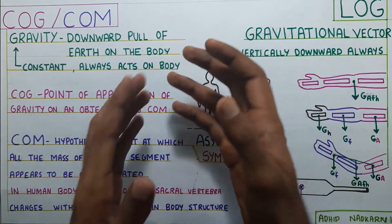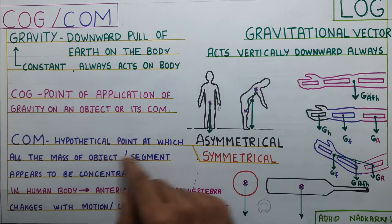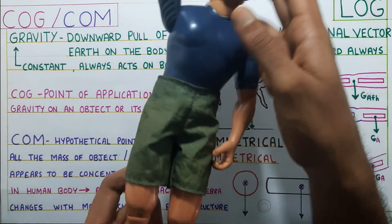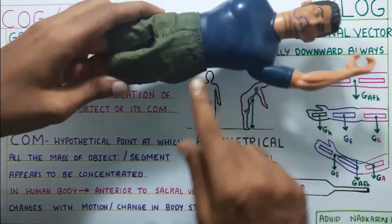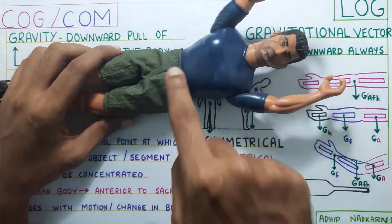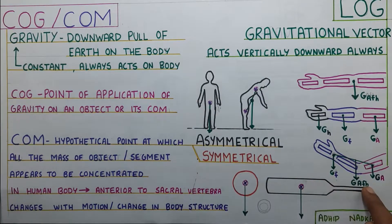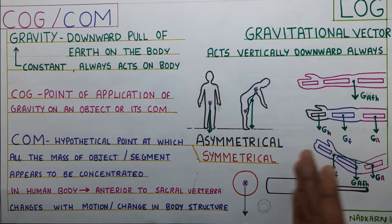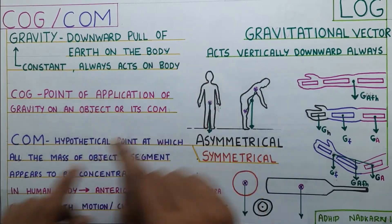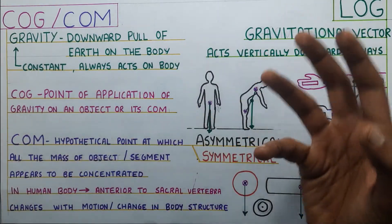Center of mass is a hypothetical point at which all the mass of the object or segment appears to be concentrated. In Joe, if I am able to balance him at a point where he is not falling on either side, that is his center of mass. For a ball, it will be right at the center, whereas for a bat, it will be slightly on the heavier side — that is an asymmetrical object. So when gravity is acting on the center of mass, it can be called the center of gravity.